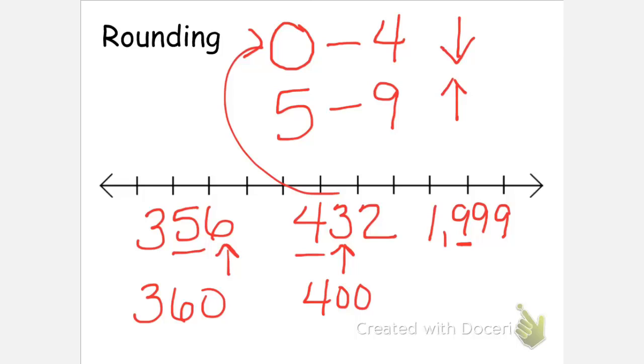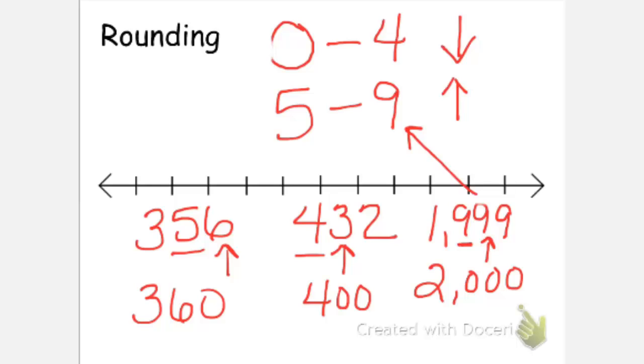If we had the number 1,999 and we wanted to round that to the hundreds place, we would look at the 9 that's directly to the right of it. And because that's between 5 and 9, we would round up. Now that one is a little bit trickier because when you add a 1 to the 9 in the hundreds place, that causes you to carry a 1 over to the thousands place. It makes it 2,000 because you can't have a 10 in the hundreds place. So it becomes 2,000. This would be a good time to pause the video and note these examples and the rule about rounding in your notes.